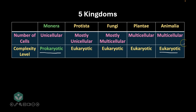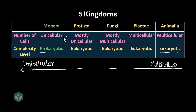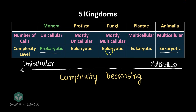So these are our five kingdoms. Animalia, plantae, fungi, and protista are eukaryotic, while monera is prokaryotic. Animalia and plantae are entirely multicellular; fungi is mostly multicellular; protista is mostly unicellular; and monera is entirely unicellular. Looking at this progression, we're moving from multicellular to unicellular, and from eukaryotic to prokaryotic. Basically, the complexity of living organisms decreases as we move from animalia towards monera.